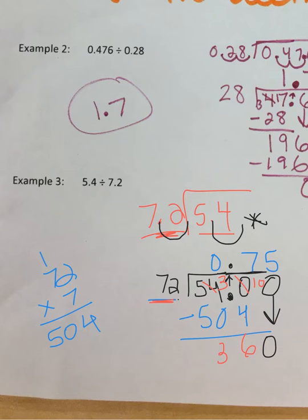Alright, 72 times 5. 5 times 2 is 0, and a 1. 35 plus 1 is 36. I subtract 360, and I'm left with 0. So I am done with my problem.